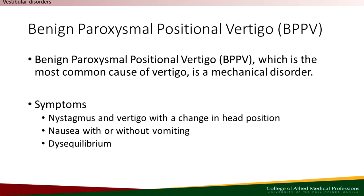With that said, let's move on to our first peripheral disorder known as BPPV. This is characterized as a mechanical disorder within the vestibular system. Symptoms of BPPV include nystagmus — involuntary, rapid, and repetitive movement of the eyes — accompanied by vertigo with changes in head position, nausea often accompanied by vomiting during episodes of vertigo, and disequilibrium leading to a loss of balance and potential falls. It is important to be aware of these symptoms ahead of time because nausea and disequilibrium could lead to difficulties in handling a patient session.